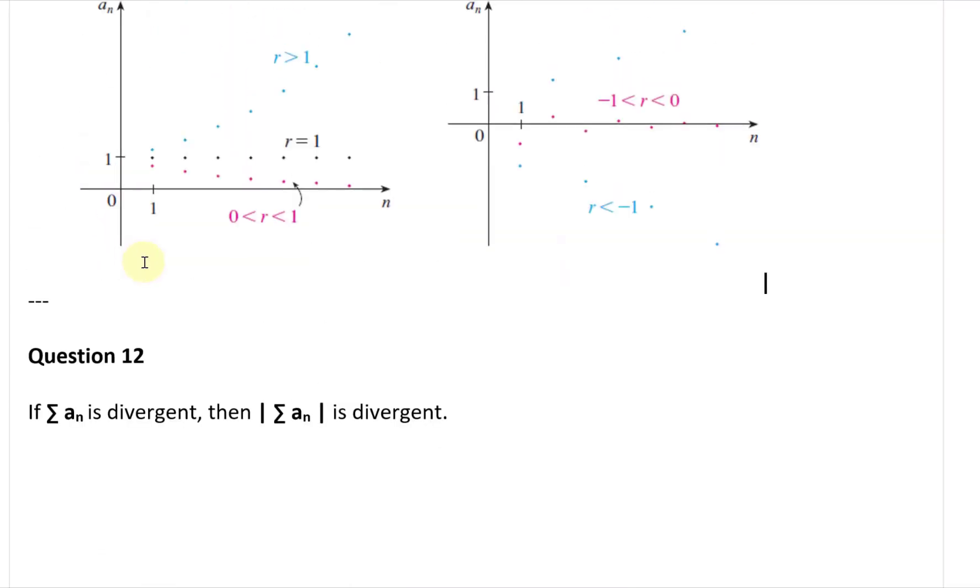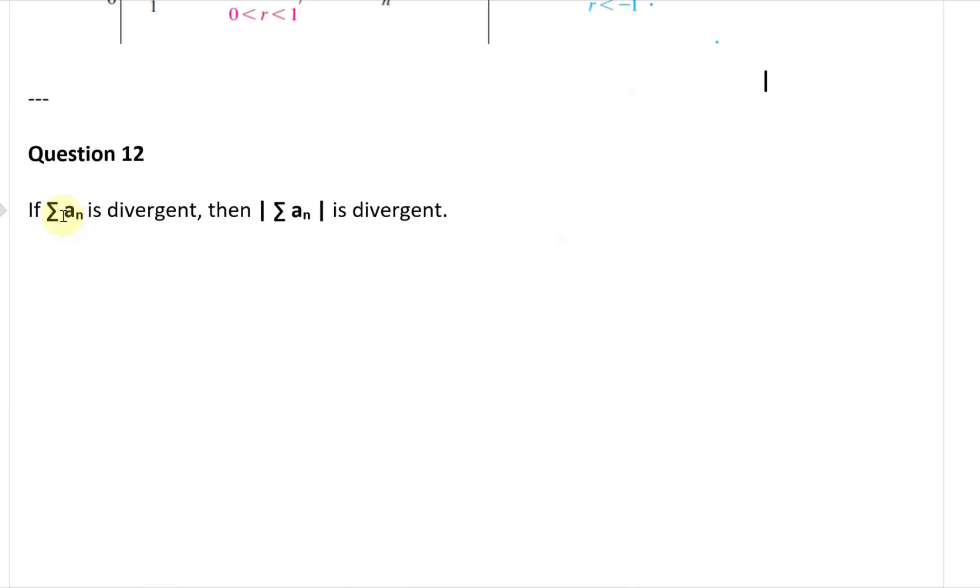All right, so now let's look at question 12. This one states, if the summation of the series aₙ is divergent, then the absolute value of aₙ is divergent.